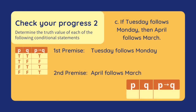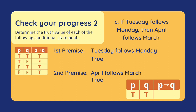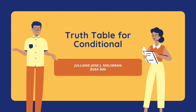Let's have a last one. If Tuesday follows Monday, then April follows March. Our first premise is 'Tuesday follows Monday.' This is true because Monday comes before Tuesday. Our second premise is 'April follows March.' This is also true because March comes before April. Since both our premises are true, our conditional is also true. I hope you learned a lot from my report about the truth table for the conditional.